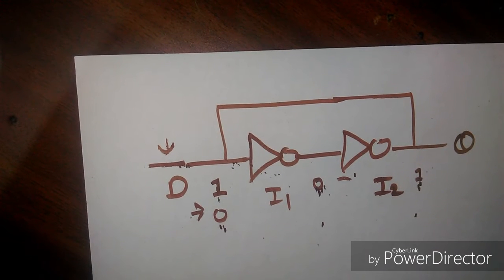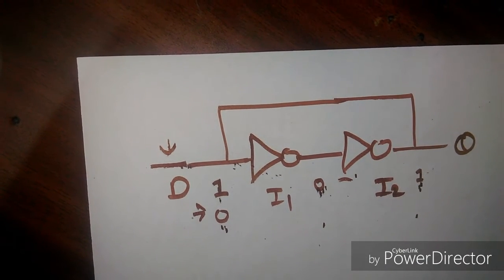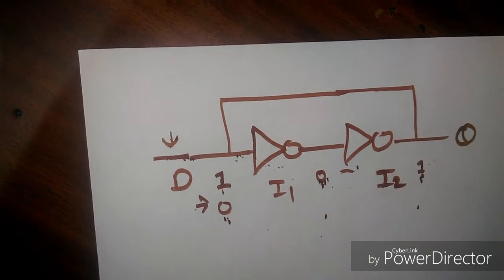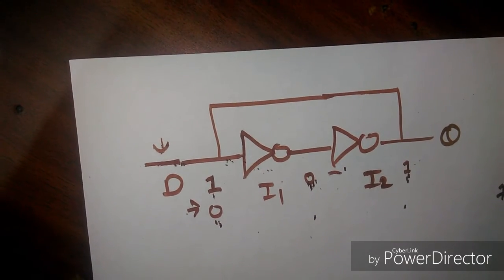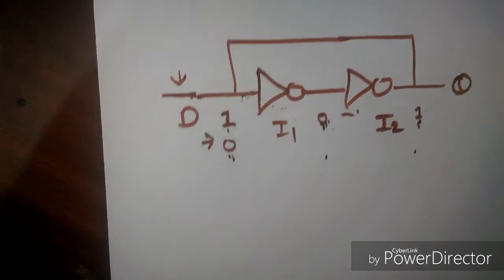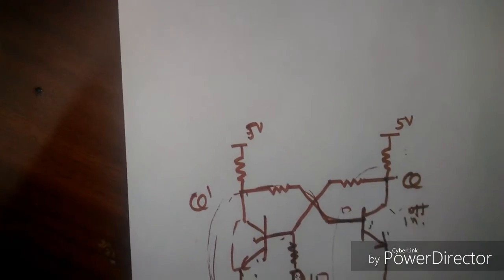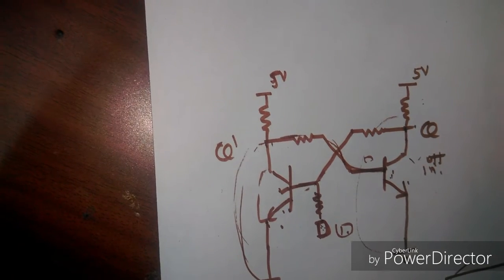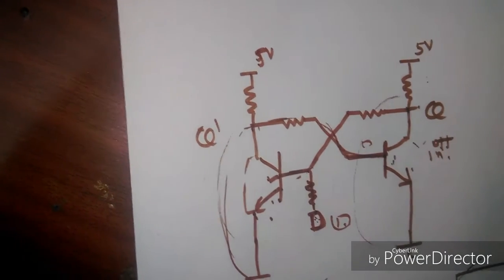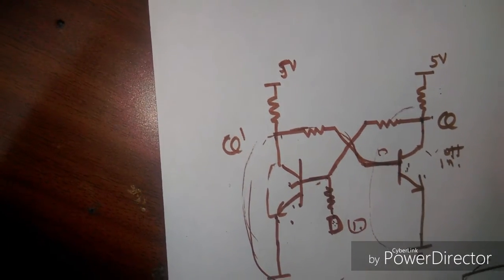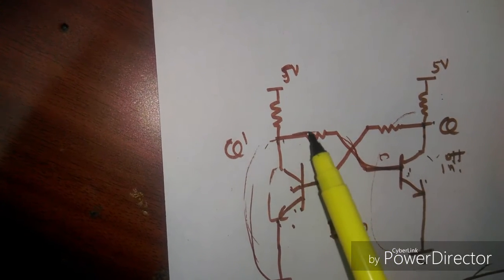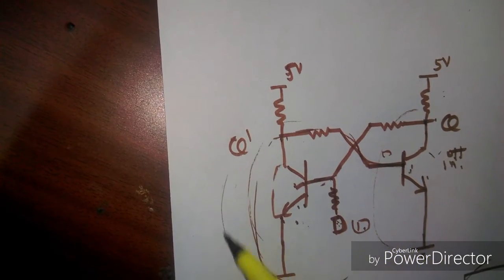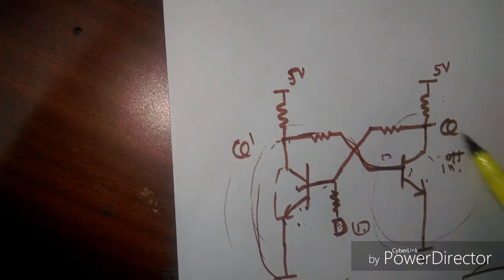But sometimes we don't have an IC, so I am going to make this circuit with the help of transistors. Let's see how this circuit looks when made with transistors. This is the D flip-flop using transistors — again using two inverters, each made of a transistor. This one is the first inverter and this one is the second inverter.